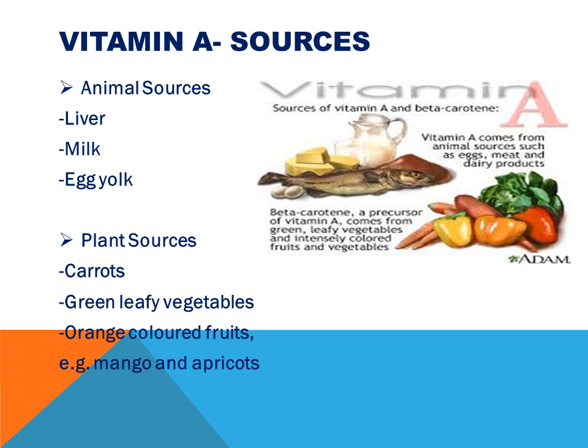Vitamin A is found as retinol in animal foods such as liver, milk, and egg yolk. In plant sources, Vitamin A is found as beta-carotene, which is specially found in carrots, green leafy vegetables, and orange-colored fruits such as mangoes and apricots. In the human body, this beta-carotene obtained from plant sources is converted into retinol, and two parts of beta-carotene are required to form one part of retinol.